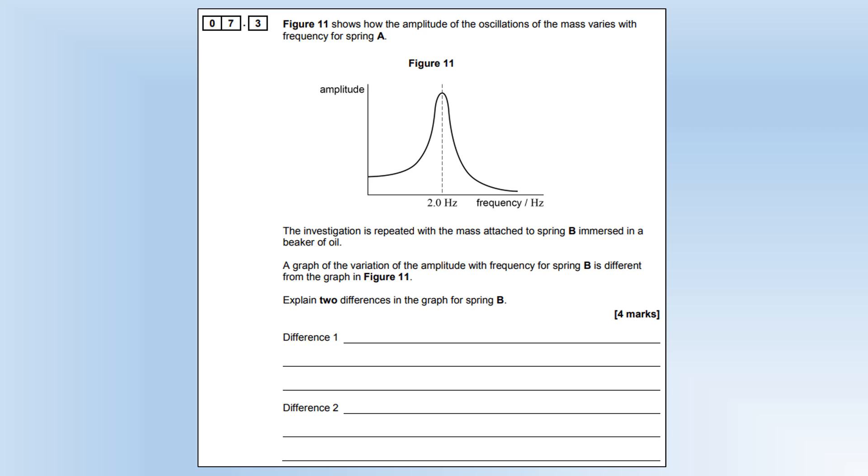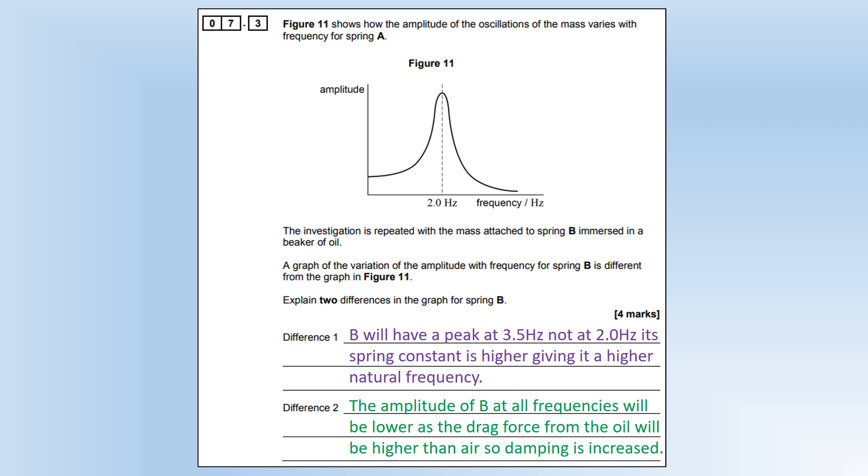The final question: we've got a diagram showing how the amplitude varies with frequency for spring A. The investigation is repeated with the mass attached to spring B immersed in a beaker of oil. The graph of the variation of amplitude with frequency is different. Explain two differences. One difference is the peak is not going to be at 2 Hz; it's going to be at 3.5 Hz. The oil doesn't change what the natural frequency is, so it's going to be at 3.5 still. But the amplitude at all frequencies is going to be smaller, as the drag force from oil will be much greater than air, so its damping is going to be increased. That completes Section A of this A-level Paper 1.